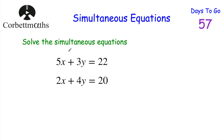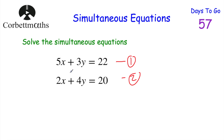Our next question: solve the simultaneous equations 5x + 3y = 22 and 2x + 4y = 20. I'll number them 1 and 2. This time we need to multiply both equations by numbers. We could multiply equation 1 by 2 and equation 2 by 5 to get 10x and 10x. Or I could multiply equation 1 by 4 and equation 2 by 3 to give 12y and 12y — and that's what I'm going to do.